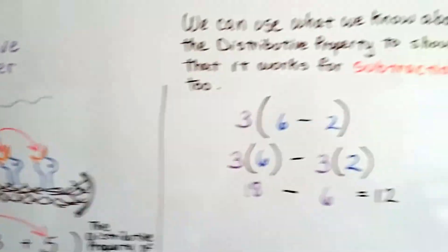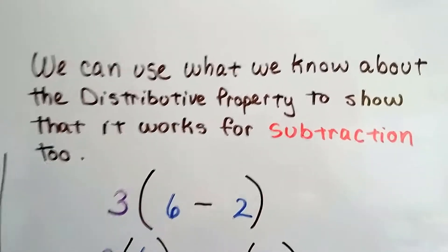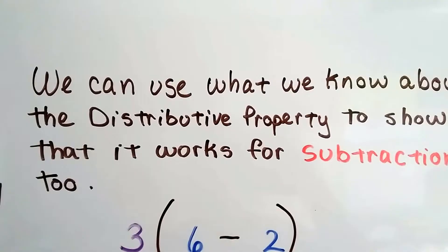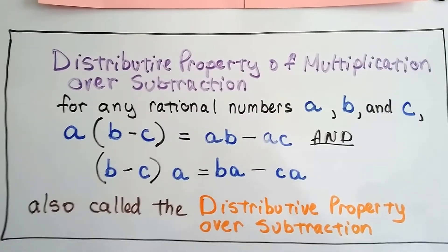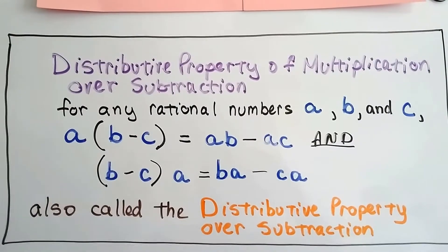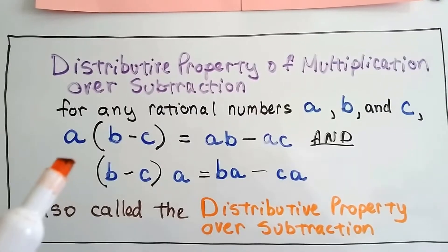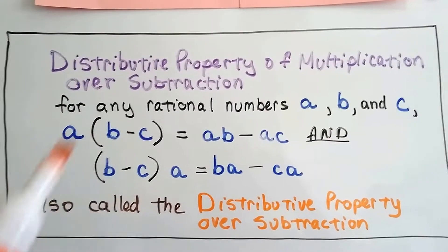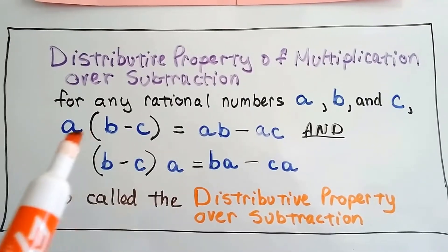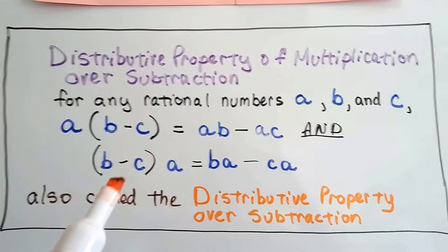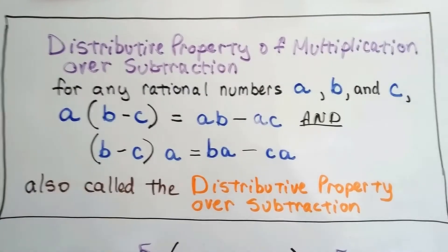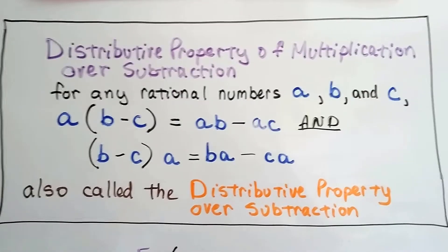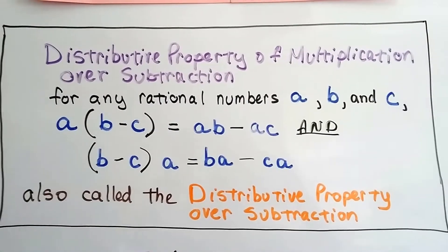So we can use what we know about the distributive property to show that it works for subtraction too. Now here's the formal distributive property of multiplication over subtraction. It says for any rational numbers a, b, and c, when we have a(b - c), it means ab - ac. And if the a is in the back, see how it's in the front, now it's in the back, we can distribute it and say ba - ca. This is also called the distributive property over subtraction. They just took out the of multiplication part.